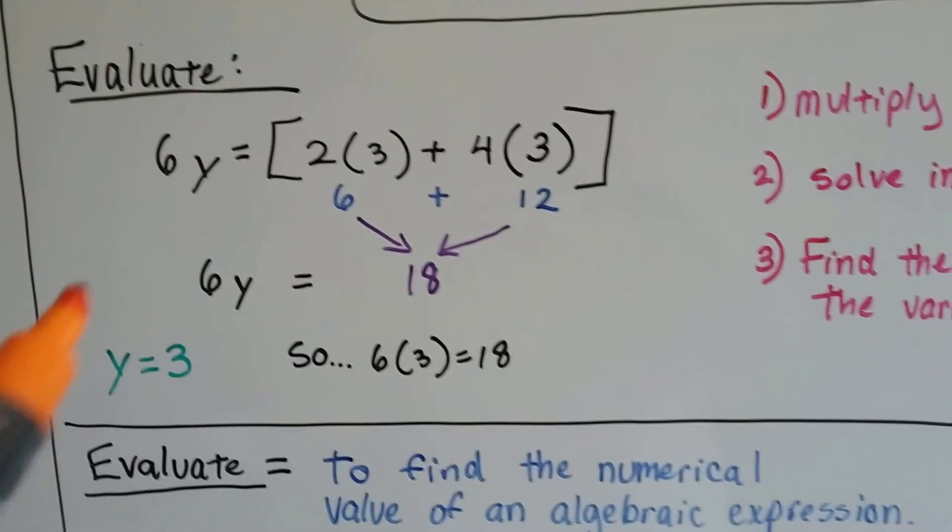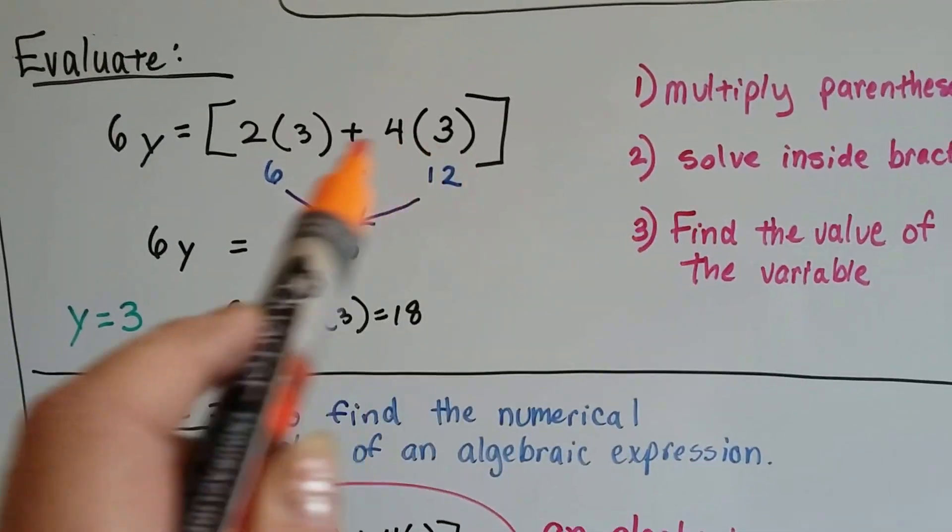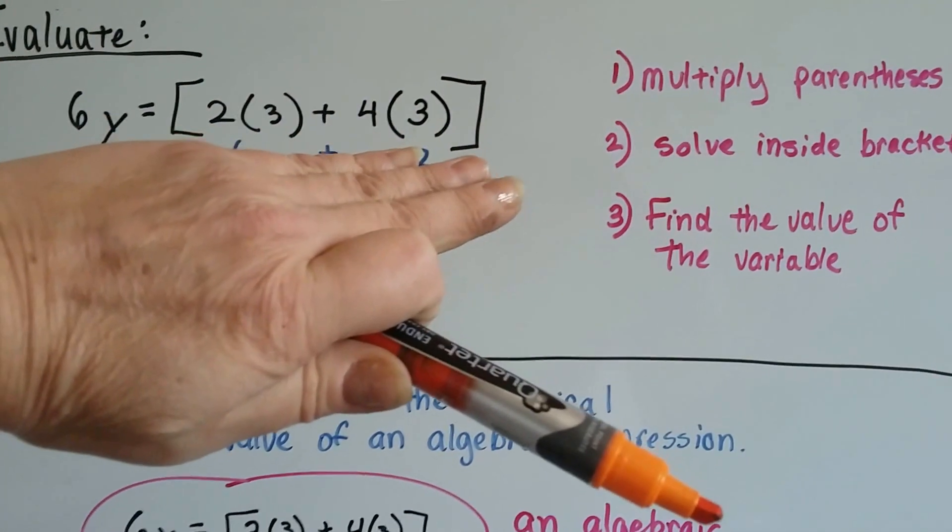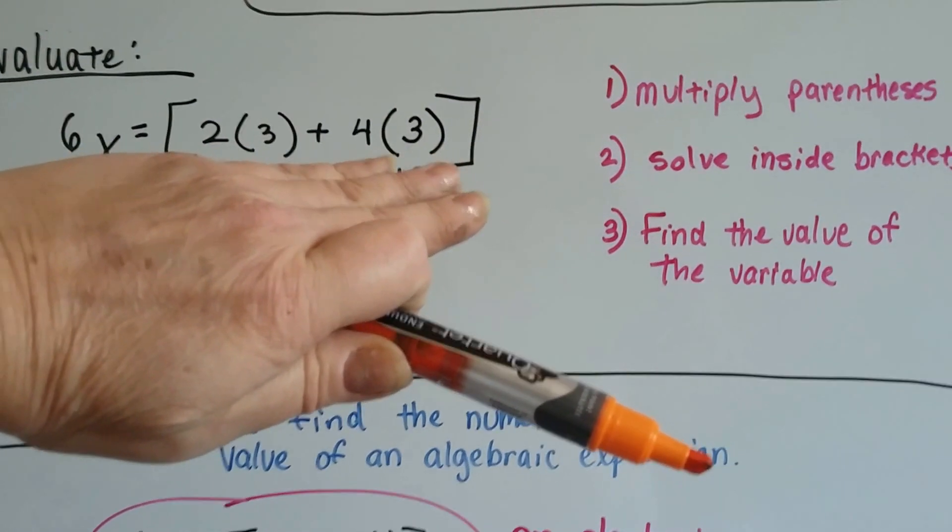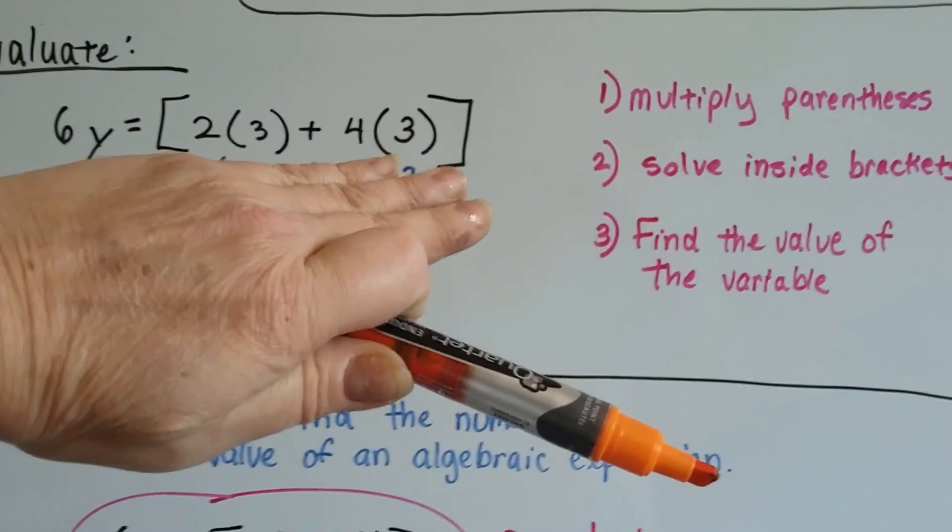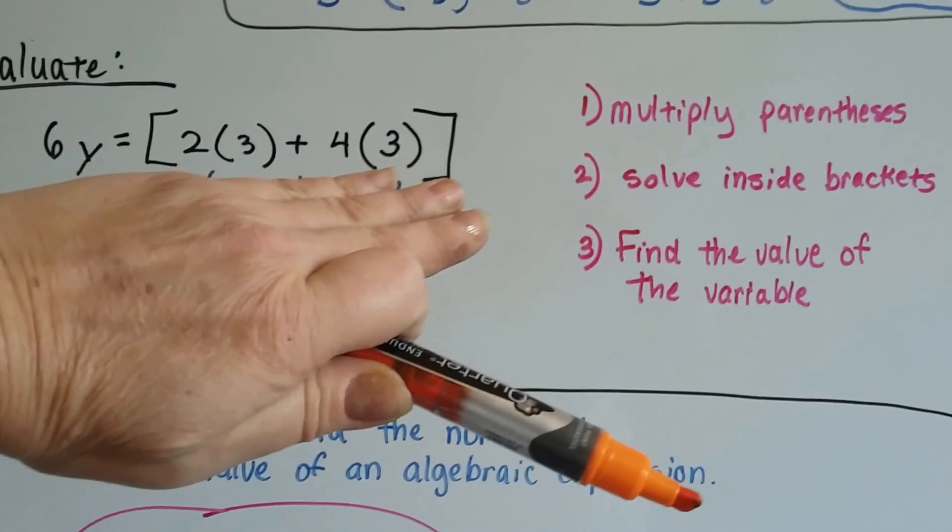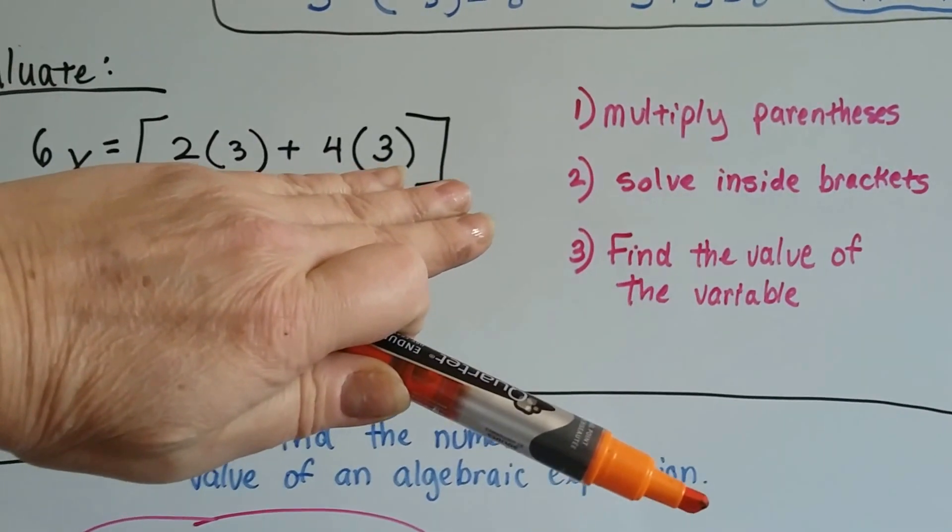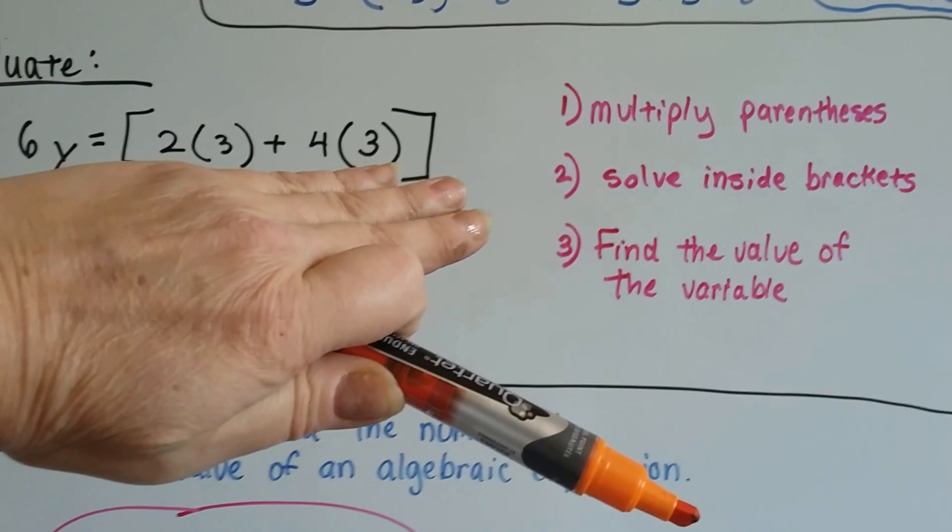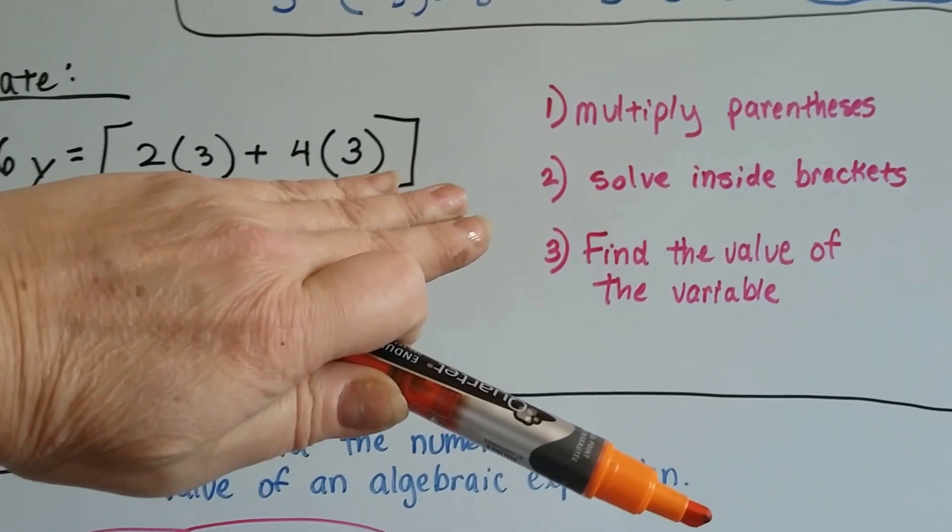So, when you see evaluate, just follow your order of operations. This looks very confusing, and it looks like this big, huge algebra problem, but it's really easy when you break it down and take it little steps at a time. We're going to multiply with the parentheses. The 2 times 3 is 6, and we've got 4 times 3 is 12.